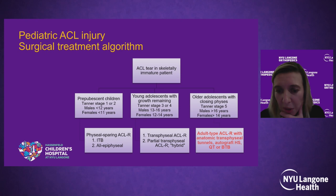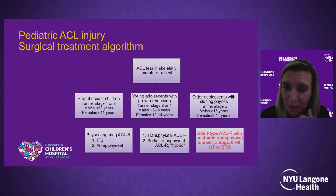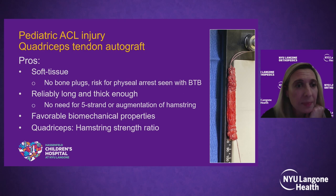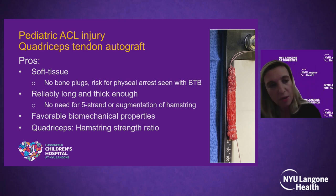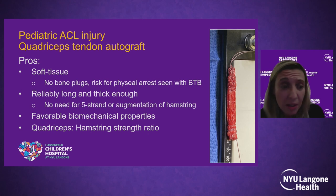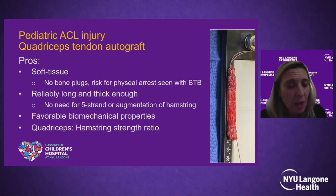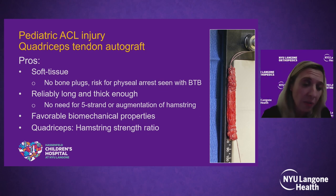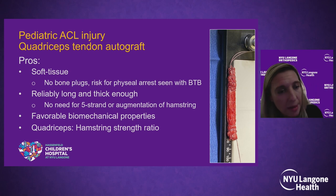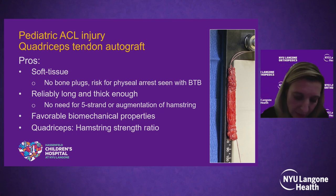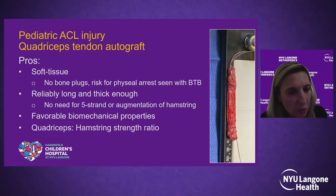For older adolescents with closing or closed physes, an adult-type anatomic transphyseal reconstruction is performed using autograft. I wanted to highlight the data on quadriceps tendon in kids — something I now use almost exclusively for this population. You don't need bone plugs, so there's no physeal arrest risk as with BTB. The graft is reliably long and thick enough — no need for five-strand hamstrings or augmentation. It has good biomechanical properties. And if a patient's ACL tear may have been contributed to by a high quad-to-hamstring ratio, taking a hamstring could potentially worsen that imbalance.